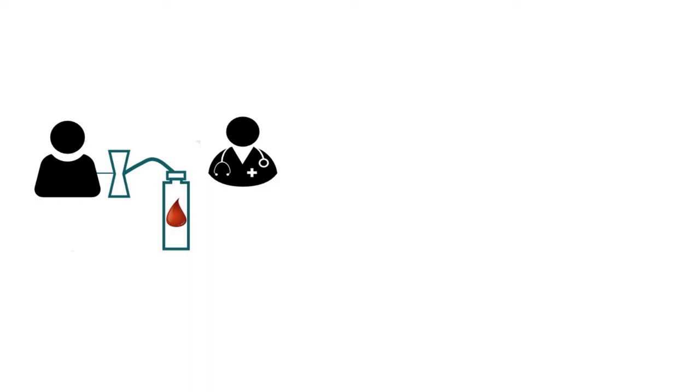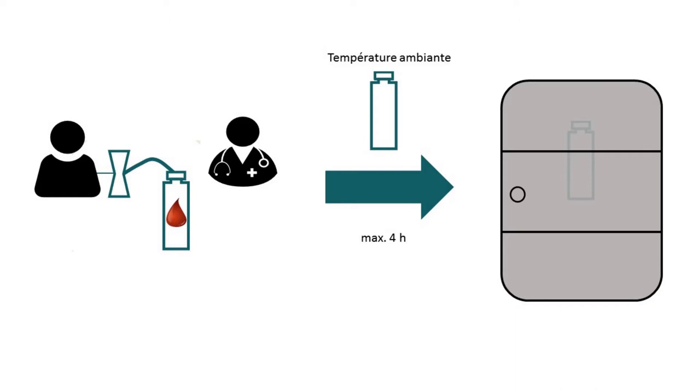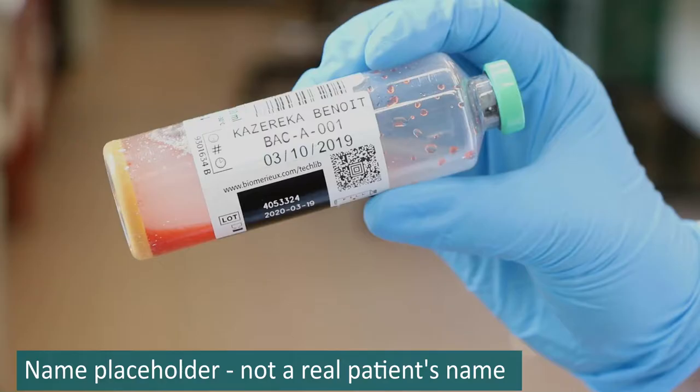After blood culture sampling, blood cultures need to be stored at room temperature until arrival at the bacteriology laboratory. The maximum delay between sampling and incubation in the automated BactiAlert incubator is 4 hours, in order to avoid false negative results. Other systems may have other instructions.